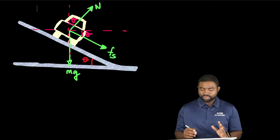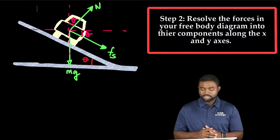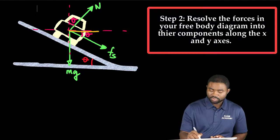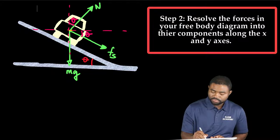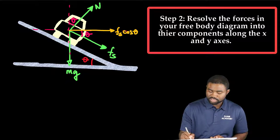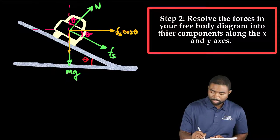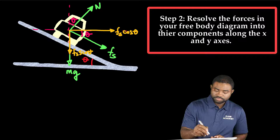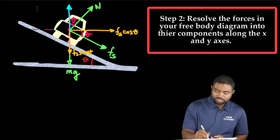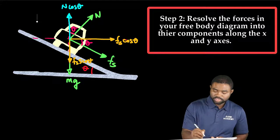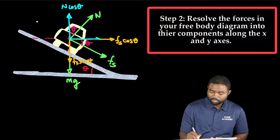What that means is that we can resolve the static friction and the normal force into two components. We have Fs cosine theta, Fs sine theta, N cosine theta, and N sine theta.